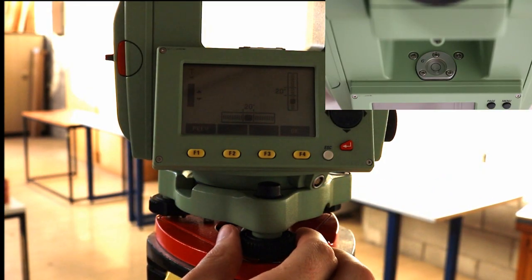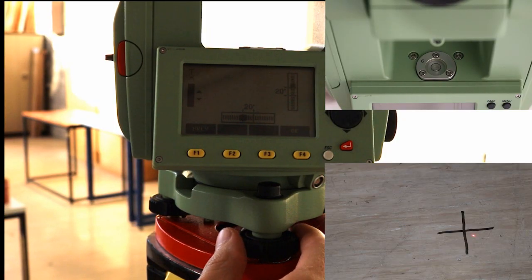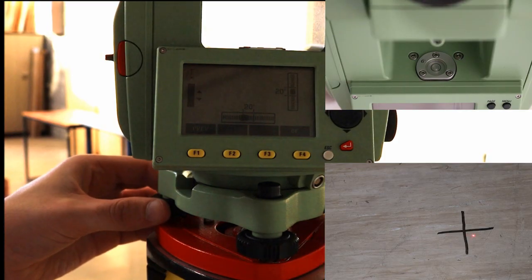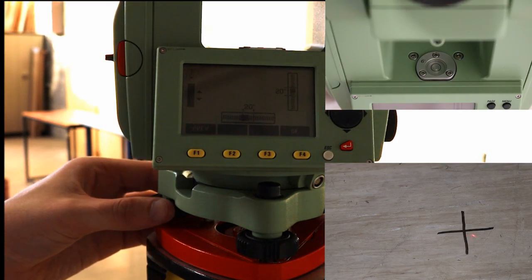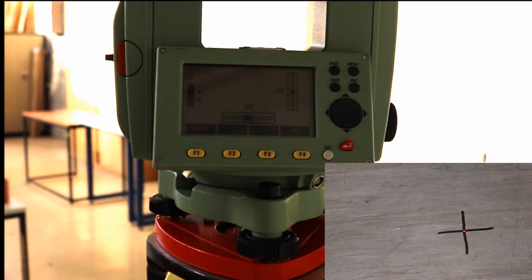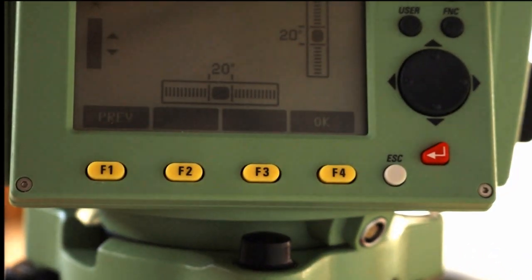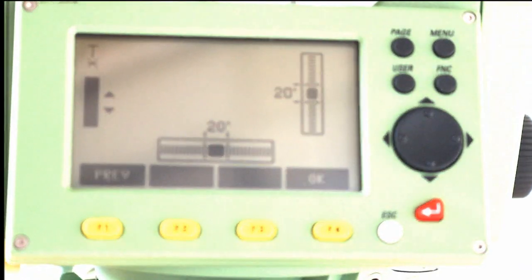If setting up over a known point, make sure the red laser marker is on the point before using the foot screws to level the total station. If the laser marker is moved, loosen the screw attaching the total station to the legs and gently slide the total station over until the laser is over the spot and then tighten the screw again. After this, you should re-level the total station in case your setup has moved slightly.